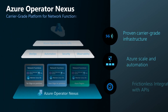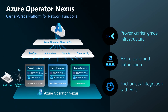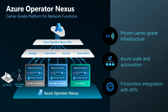Accelerate 5G service deployments and simplify network operations with Azure Operator Nexus, a hybrid cloud platform that is purpose-built to run high-performance container network functions and virtual network functions. In this demonstration, we will walk through how Operator Nexus delivers a consistent, reliable, and scalable network function deployment automation for multi-vendor 5G network functions.